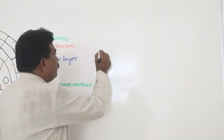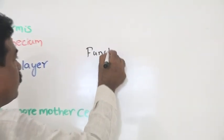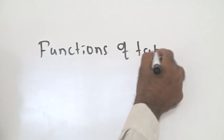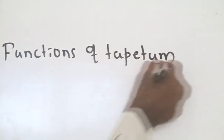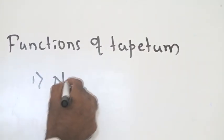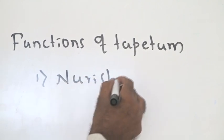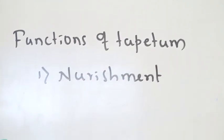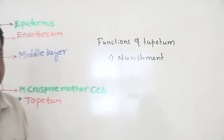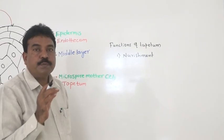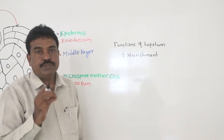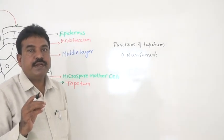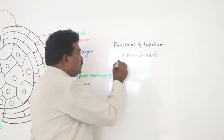The tapetum plays a very important role in nourishing the microspores as well as pollen grains. This is the cytoplasmic reason why, when analyzed, tapetal cells contain more nutrients.